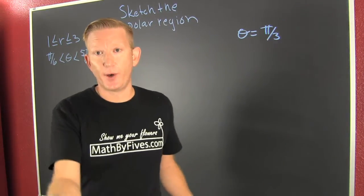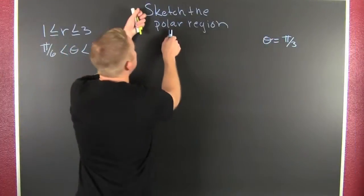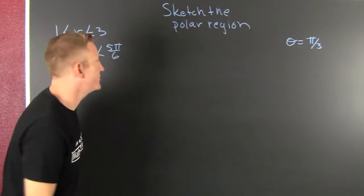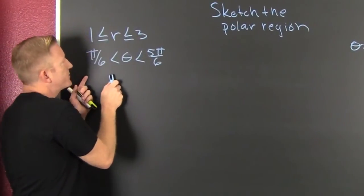This is kind of sketchy. Polar status. So I'm looking to sketch the polar region when I have some constraints. This is our first problem.